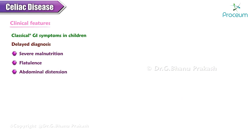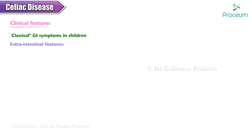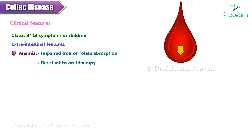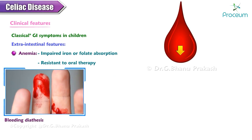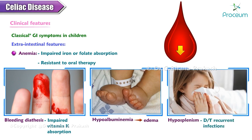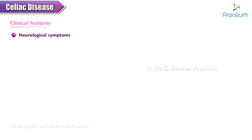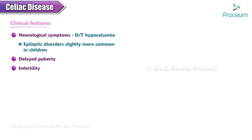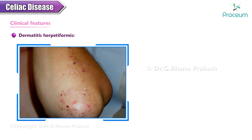Flatulence and abdominal distension caused by colonic bacterial digestion of malabsorbed nutrients are common. Extra-intestinal features seen in celiac disease include: anemia caused by impaired iron or folate absorption, which is resistant to oral therapy; bleeding diathesis due to impaired vitamin K absorption; hypoalbuminemia leading to edema; hyposplenism associated with recurrent infections; neurological symptoms due to hypocalcemia; epileptic disorders slightly more common in children; delayed puberty; and infertility and miscarriages.